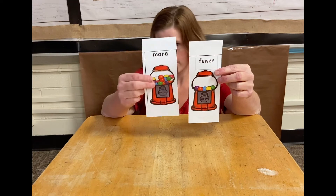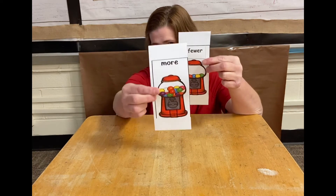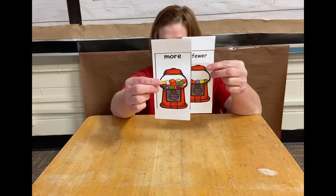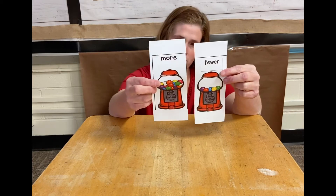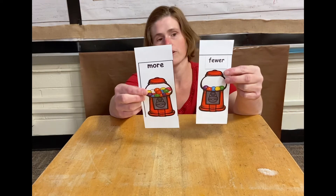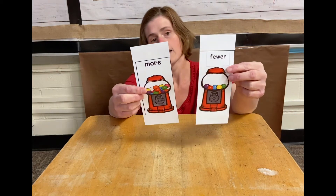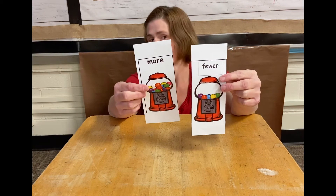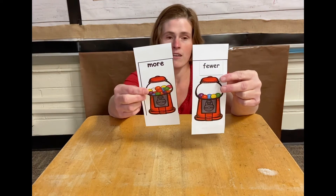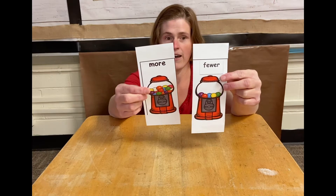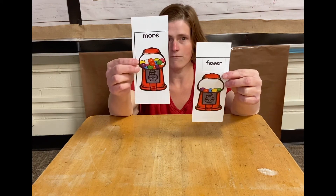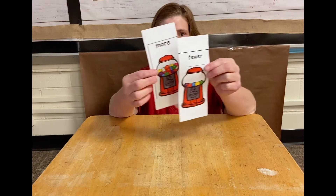So the one on this side you could say has more gumballs because it has a greater number — it almost fills up the inside of the gumball machine. And the one over here has fewer because there's only a small amount in the bottom with five gumballs in the machine. So this one has more and this one has fewer.